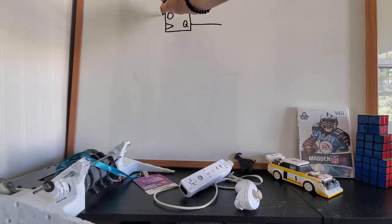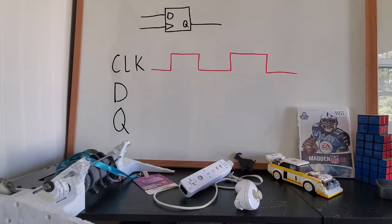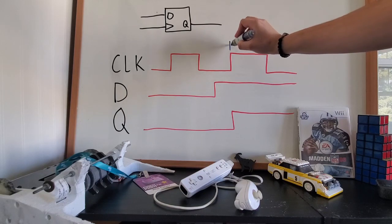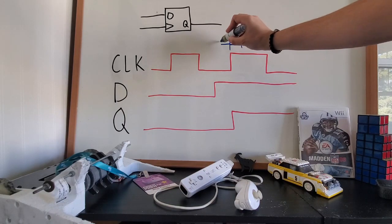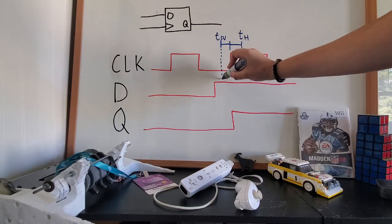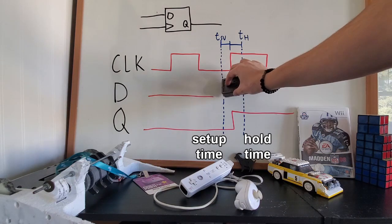Here's how the sensor works: registers latch the data on their input to their output on a rising clock edge. Whatever binary state the input is at on the moment of the clock edge, the output will become. However, in order for this to happen reliably, the input must be stable for some time before the clock edge and some time after the clock edge, known as setup and hold time respectively.